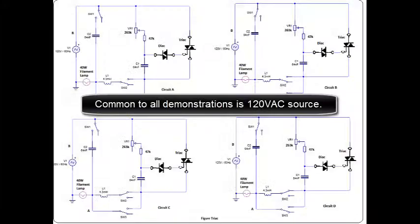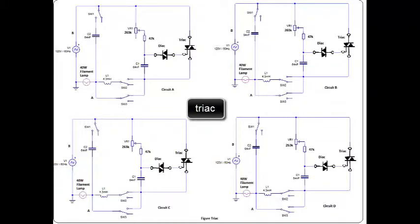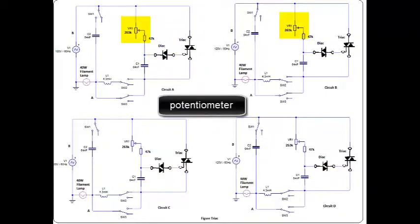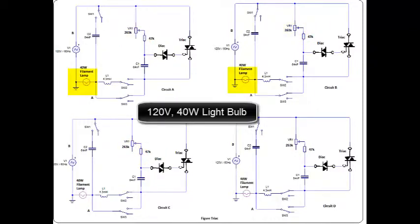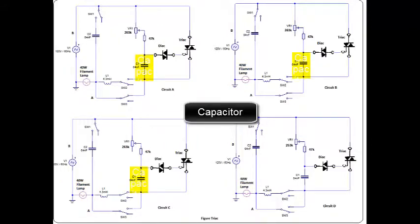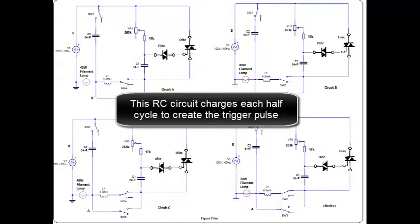There are four demonstrations. Common to all demonstrations is a 120 volts AC source, a TRIAC, a DIAC, a potentiometer, a 120 volt 40 watt light bulb, and a capacitor. This RC circuit charges each half cycle to create a trigger pulse.